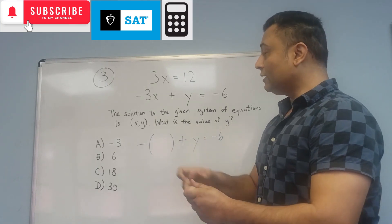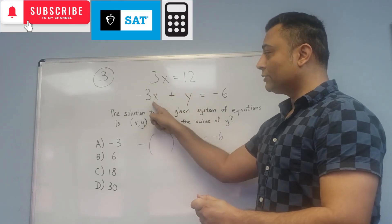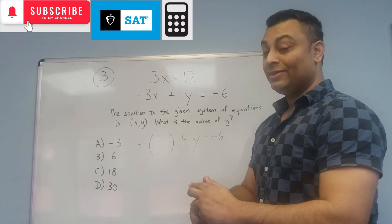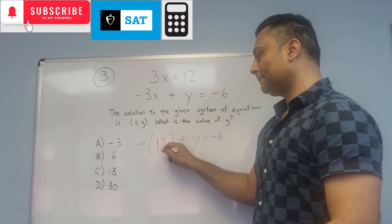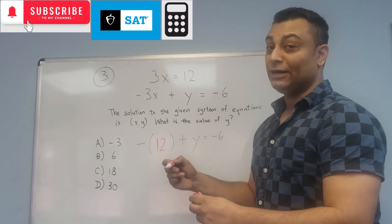And this 3x is 12. The 3x right there—that 3x is 12, so we can just put that 12 right there. It used to say 3x, but now it says 12.